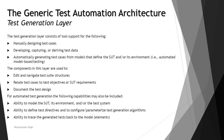For automated test generation, the following capabilities may also be included: ability to model the SUT — that is, to create business models — its environment or the test system; ability to define test directives and to configure or parameterize the test generation algorithms; and ability to trace the generated tests back to the models, enabling back traceability with respect to the business models.